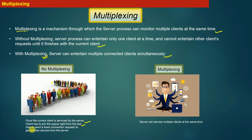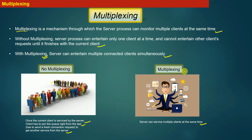It means the client has to send a fresh connection initiation request to the server to get another service from the server. Whereas the picture on the right-hand side depicts a person with multiplexing capabilities — he can do multiple tasks at the same time. Similarly, a server can service multiple clients at the same time using the concept of multiplexing.